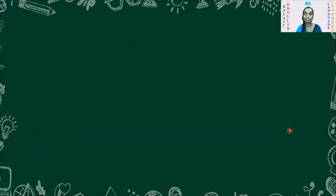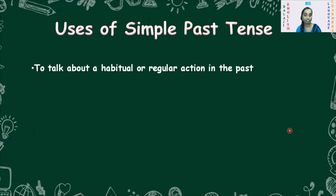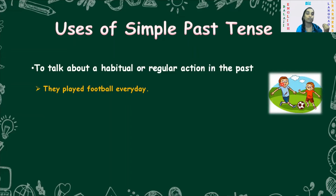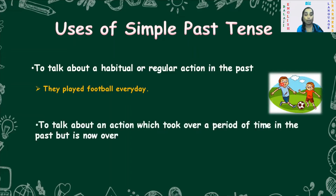Now let's see the uses of simple past tense. First, it is used to talk about a habitual or regular action in the past. For example: 'They played football every day.' You can see in the picture two children playing football — they played football every day, meaning they used to play football. Second, it is used for an action that took place over a period of time in the past but is not going on now — it is over.